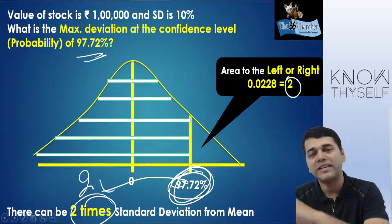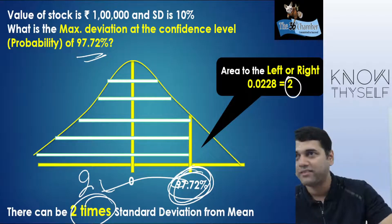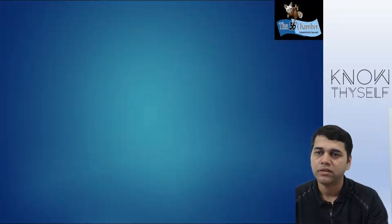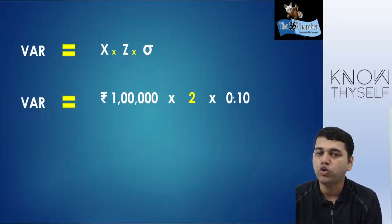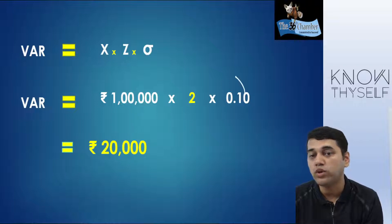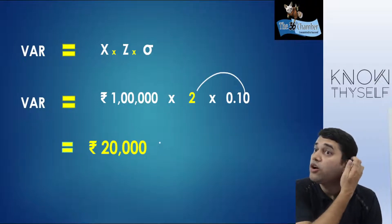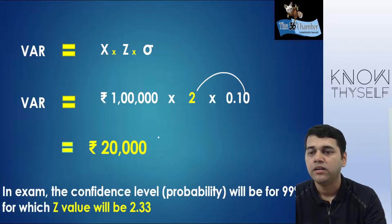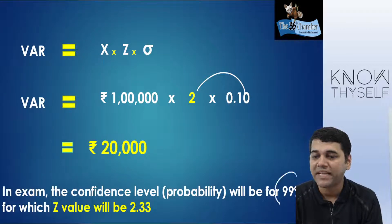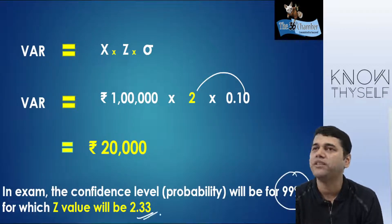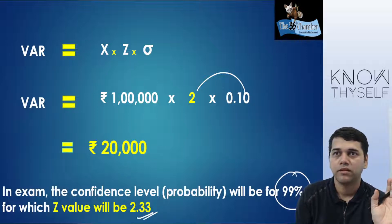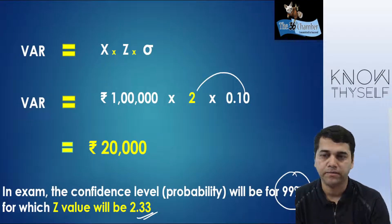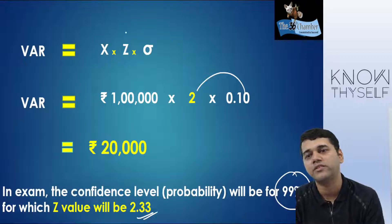In every exam question, there is already a standard confidence level. So you can memorize the number. For example: value of stock 1,00,000, standard deviation 10%, Z = 2, maximum deviation = 1,00,000 × 2 × 0.10 = 20,000. That means 2 times the standard deviation will be your loss at any point of time. In exams, the confidence level probability will be 99%, for which Z value will be 2.33 — maximum of the time. So Z = 2.33.